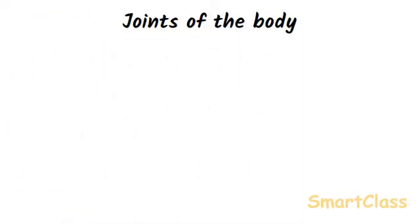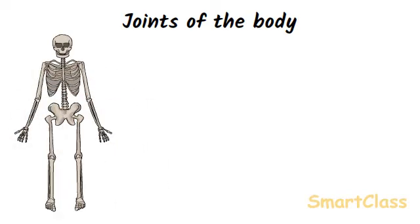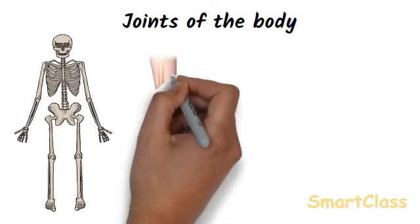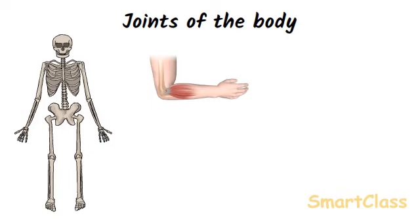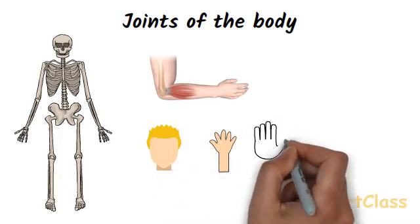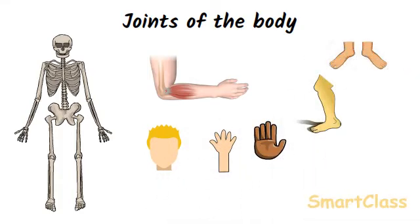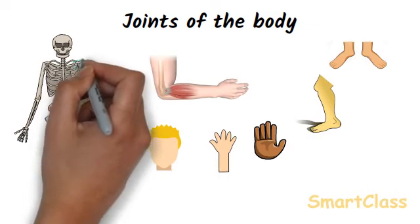Our skeleton is made up of hard and strong bones. Bones cannot be bent. We can bend or move our body parts only at those places where two or more bones join together — such places are called joints. We can bend our arm at the elbow because the bones of the upper arm and lower arm form a joint at the elbow. Most joints allow the bones to move; the amount of movement depends on the type of joint.